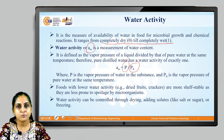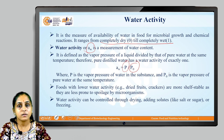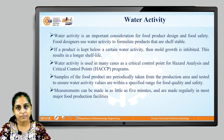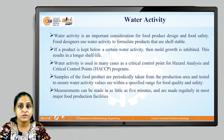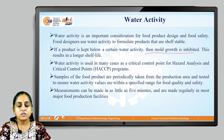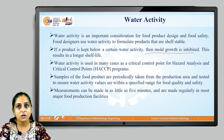Foods with higher water activity are more prone to spoilage microorganisms. Water activity can be controlled by drying, adding solutes like sugar or salt, or by freezing. It is an important consideration for food product design and food safety. Food designers use water activity to formulate products that are shelf stable — if a product is kept below a certain water activity, mold growth is inhibited, resulting in a longer shelf life. Water activity is also used in many cases as a critical control point for HACCP programs. Measurements of water activity can be taken in less than 5 minutes and are made regularly in most major food production facilities.